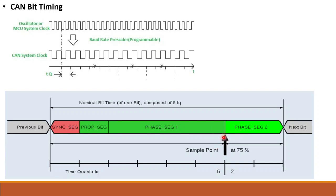Another important parameter is the Sync Jump Width, or SJW. This defines how much the bit timing can shift left or right during resynchronization. SJW depends on the synchronization jump segment and is mainly used for resynchronization purposes in CAN protocol.